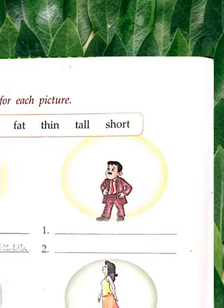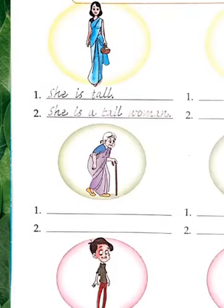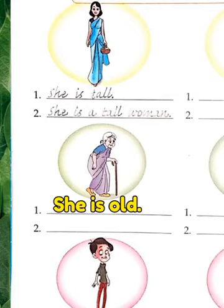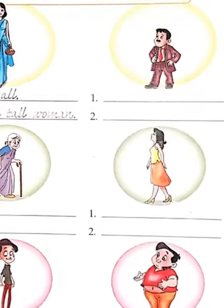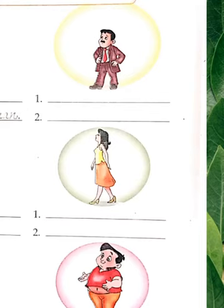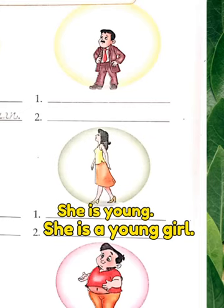Next, yeh ek buri aurat hai — old. Toh dusra sentence banayenge: 'She is an old woman.' Theek hai, woh ek buri aurat hai. Okay then next — yahan par ek ladki hai, yellow dress pahne huyi. Iske liye banayenge: 'She is young' — woh jawan hai. Dusra line: 'She is a young girl.'